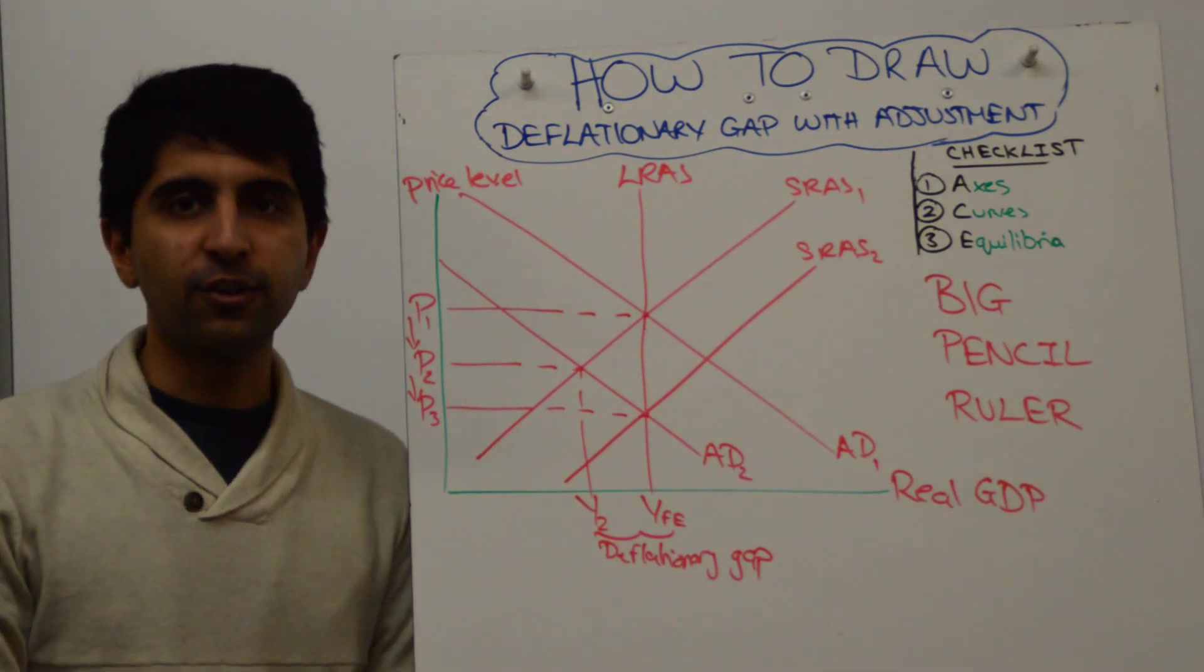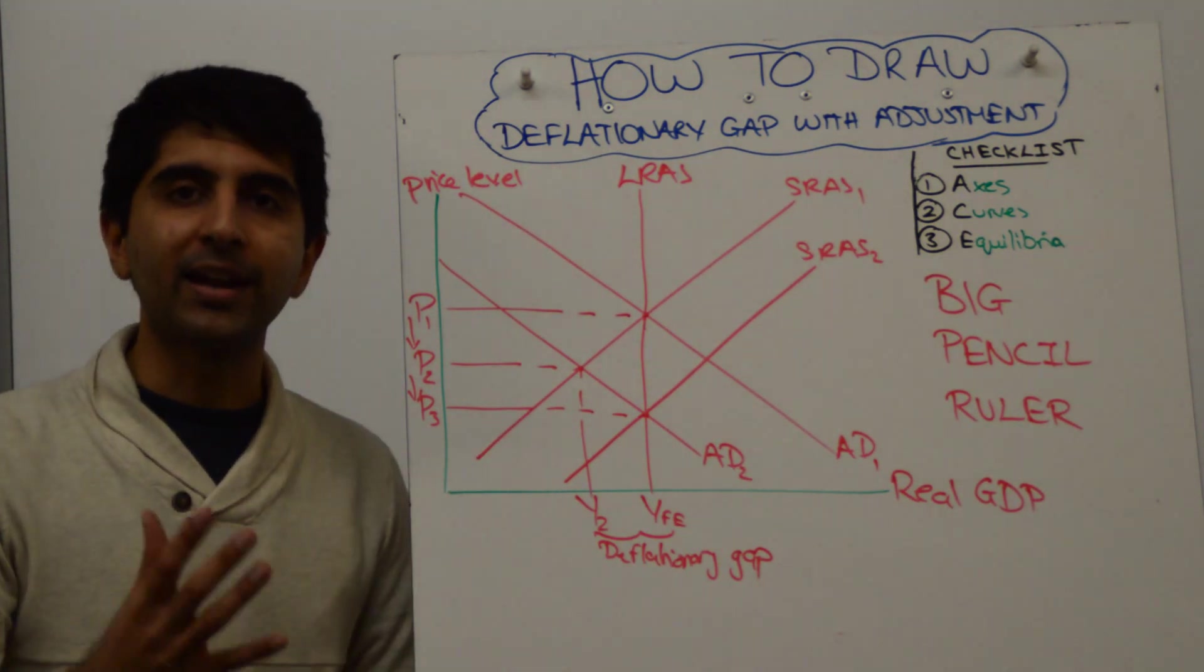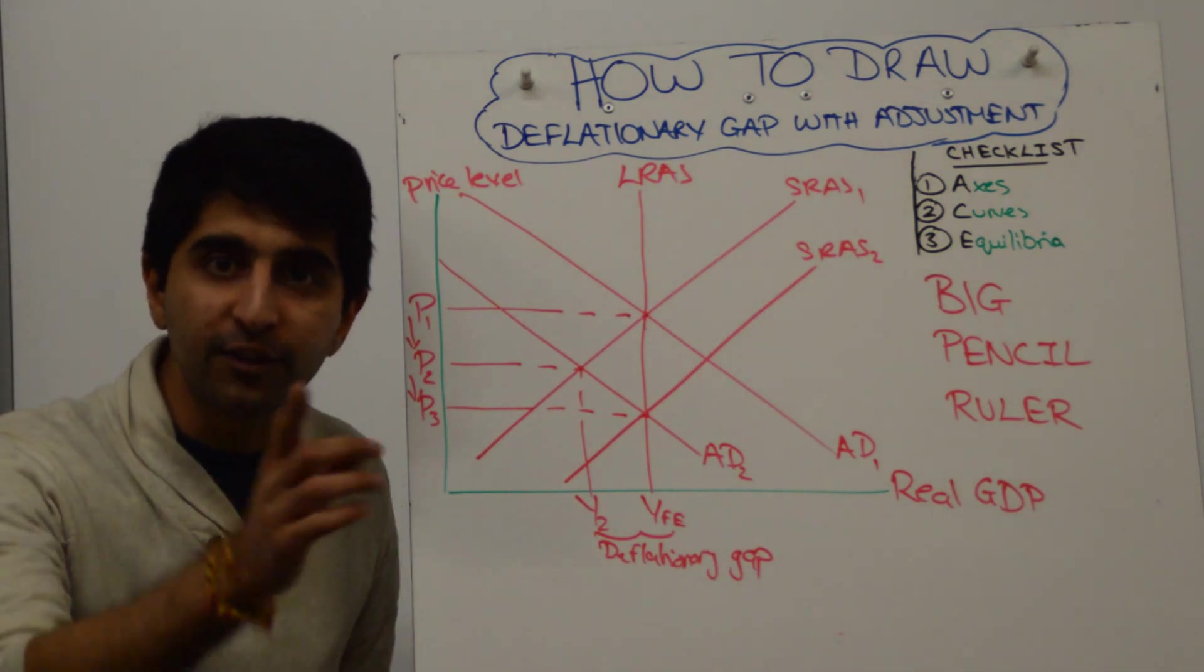That's how you show the adjustment of a deflationary gap in the classical model. Thanks for watching, guys. See you all in the next video.